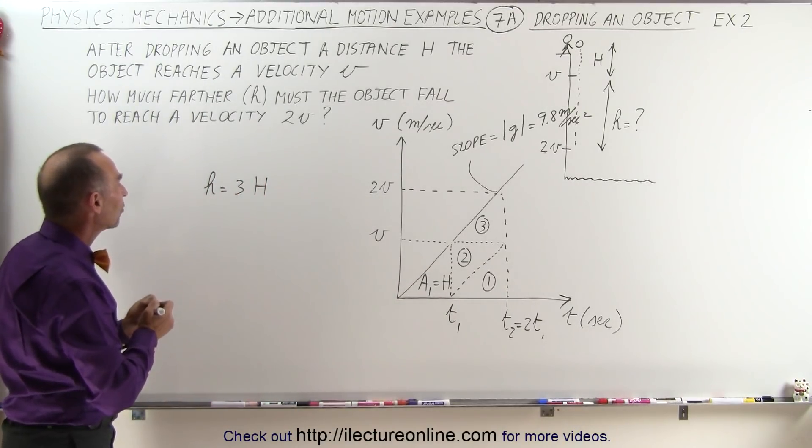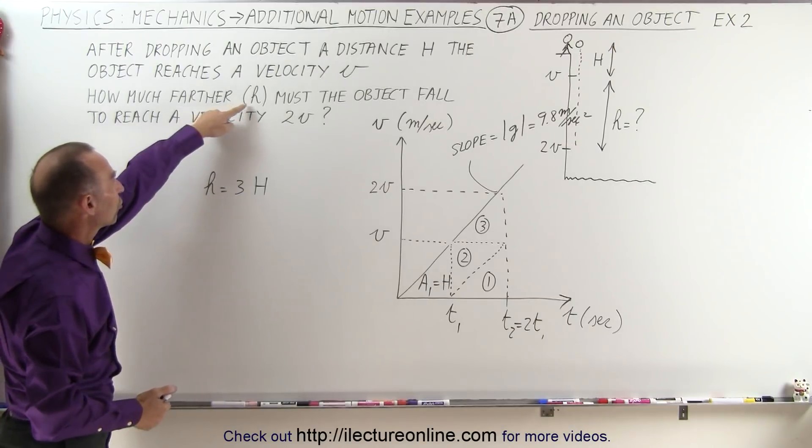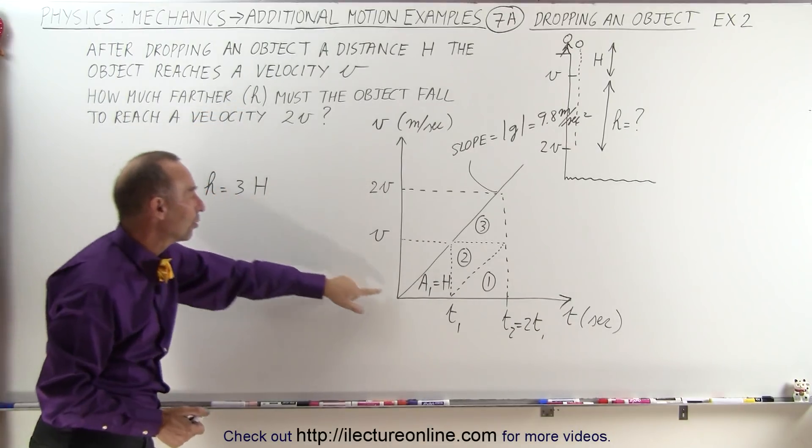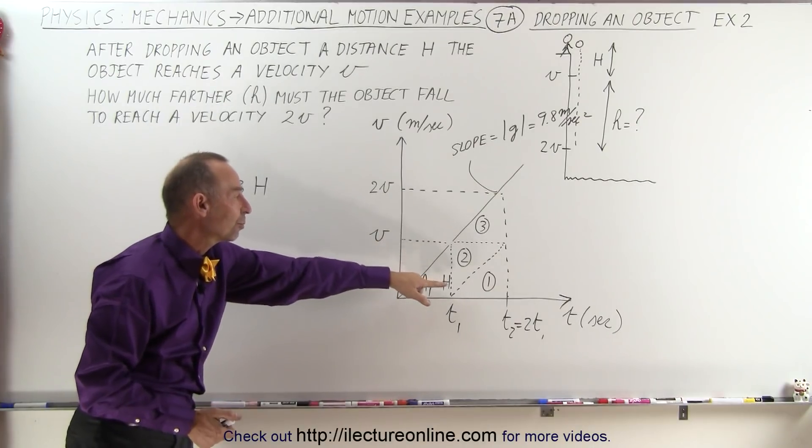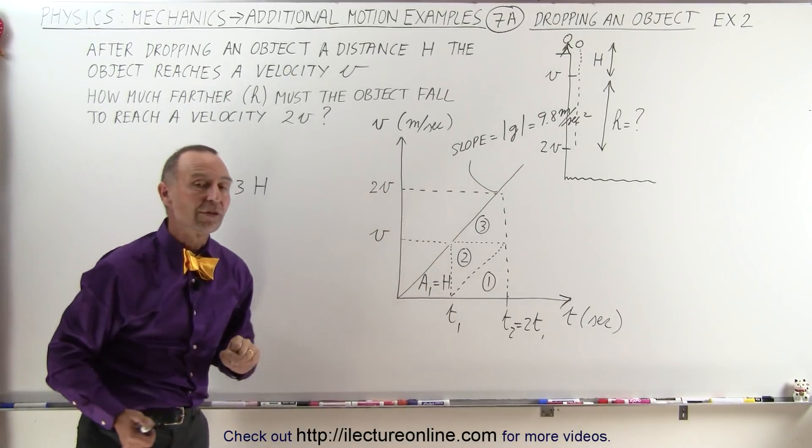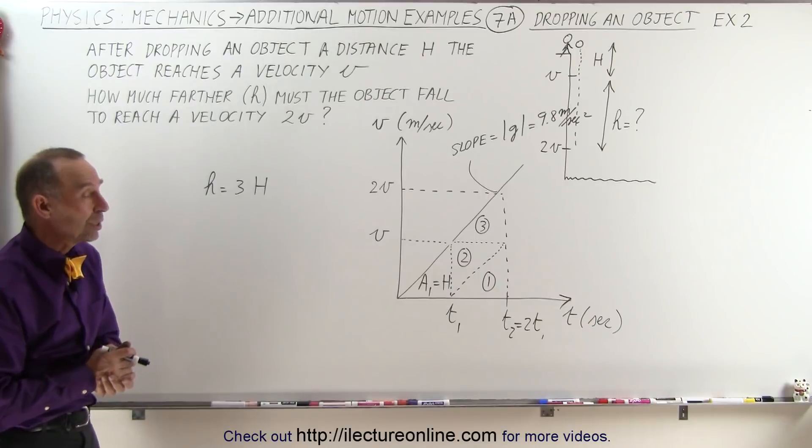We need three times as much distance to get to the velocity equal to 2v. So simply graphically, it's really easy to see that the additional distance traveled, small h, is simply three times the distance needed to get to v. You need three times as much distance to get to 2v. And graphically, that's really easy to do.